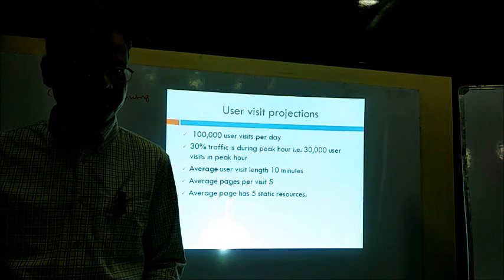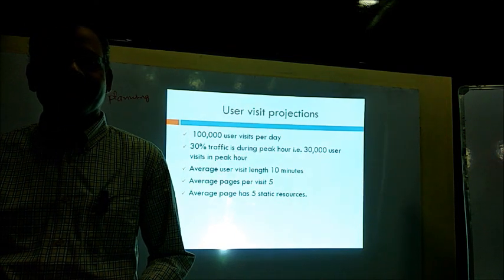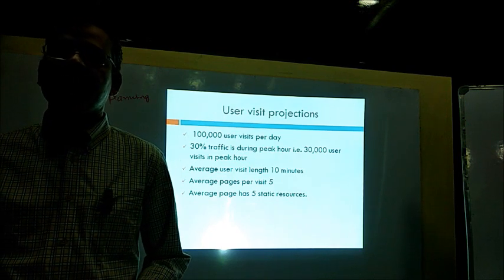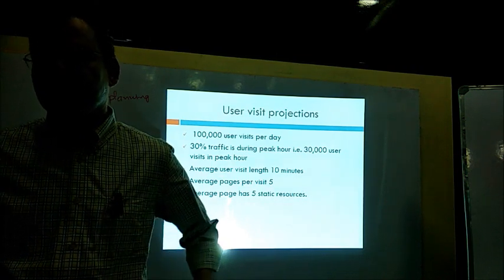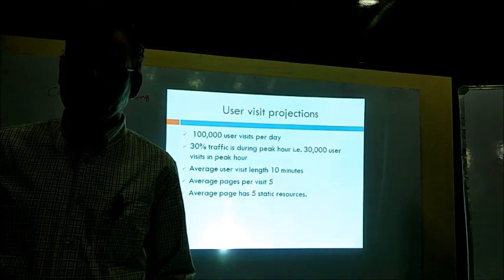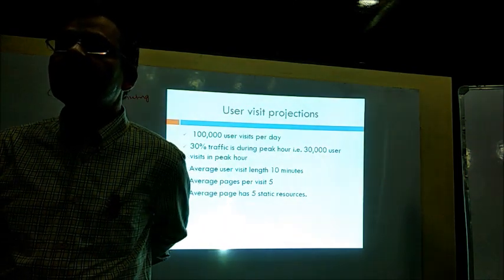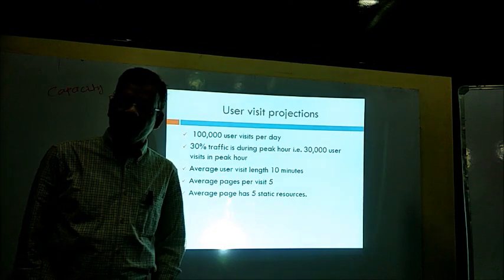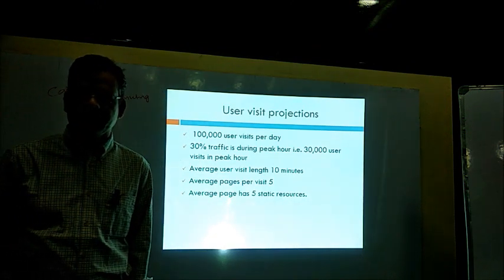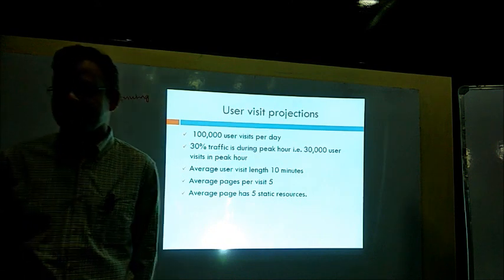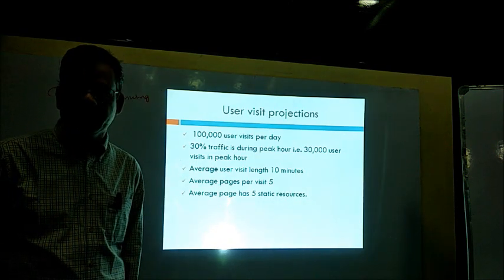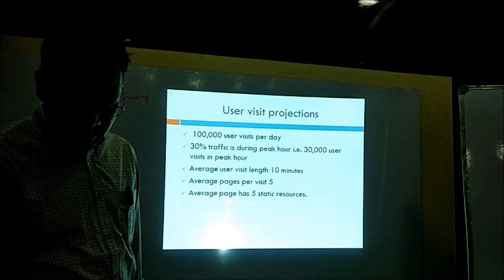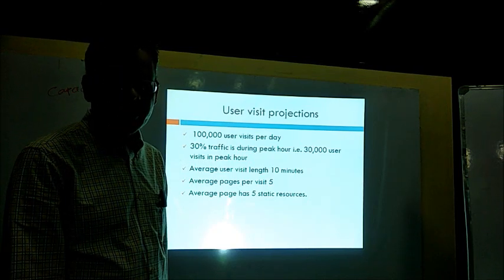Capacity planning is about coming up with the proper servers required in production — the required infrastructure. You don't configure machines and install servers yourself, but you have to specify how much your application requests, what kind of DB computing, what kind of app servers, or what kind of web server machines you require.